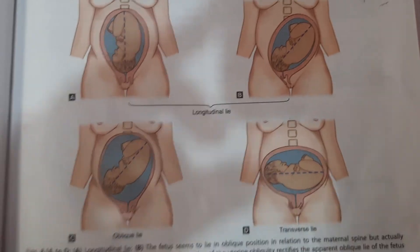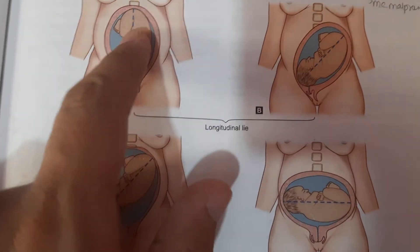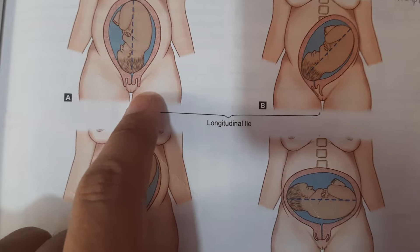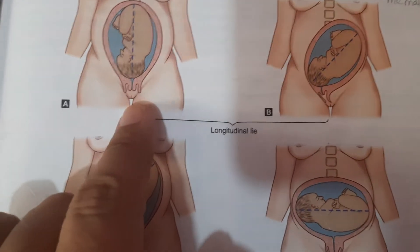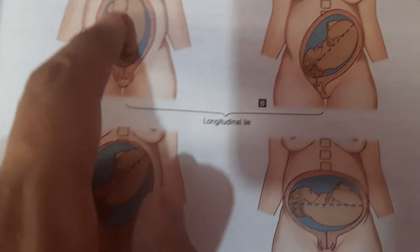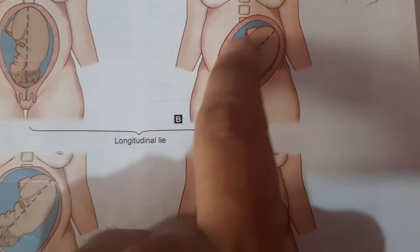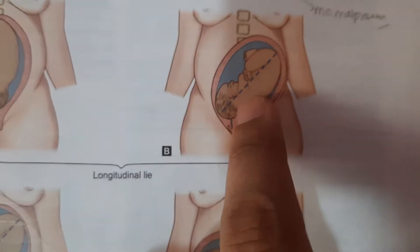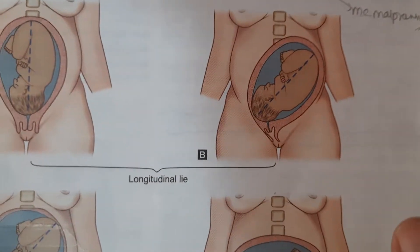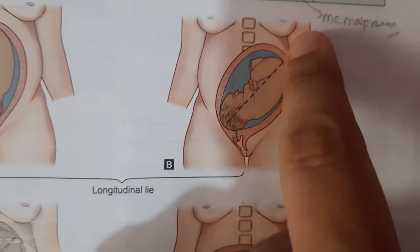This chart shows the different positions of the fetus. The relationship of the long axis of the fetus with the long axis of the centralized uterus or maternal spine is known as lie. The longitudinal lie is most common. Even if the uterus appears oblique in the diagram, if we rotate it to the centralized position, we can see that the long axes of the fetus and uterus align — making it longitudinal.